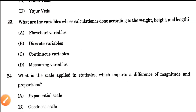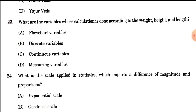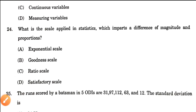Question number 23: What are the variables whose calculation is done according to weight, height, and length? Those variables are called continuous variables. Option C is the correct answer.